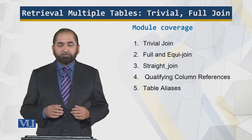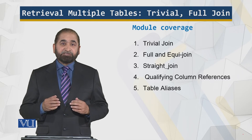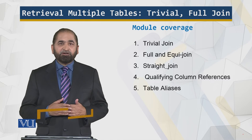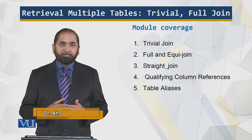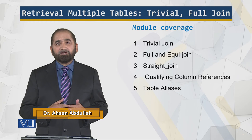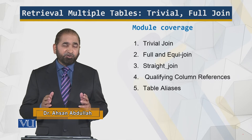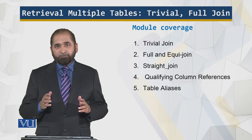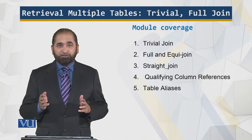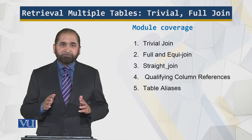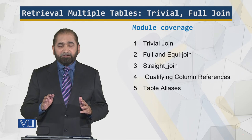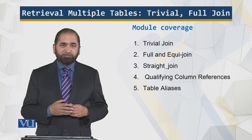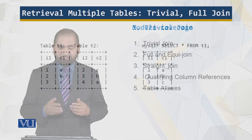So we will also look at the trade join, qualifying column references, and of course using the aliases. Qualifying column references means that how do you distinguish between which column names in a table you are referring to in a query such that the query runs unambiguously. So as we proceed, you will understand what I am saying.